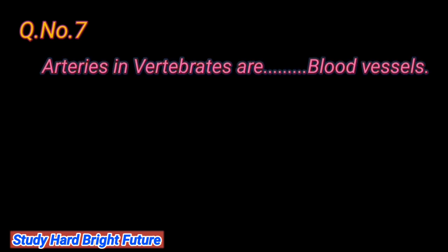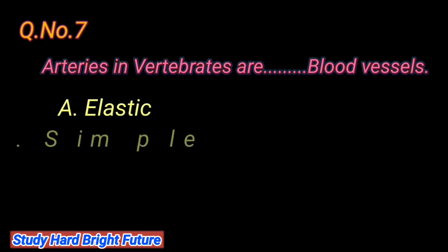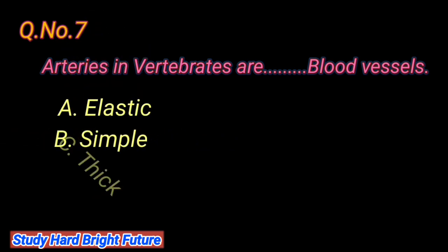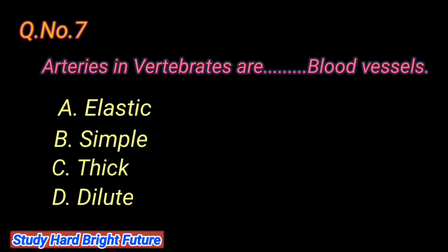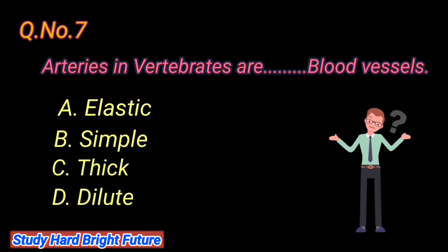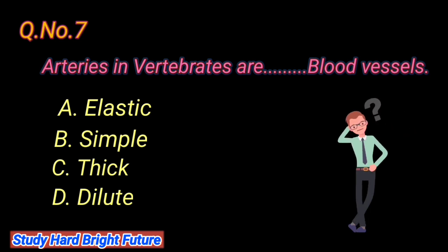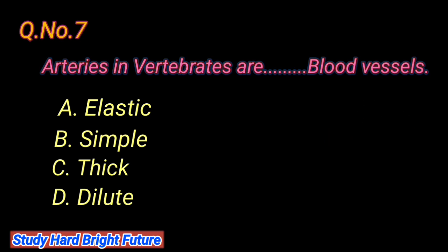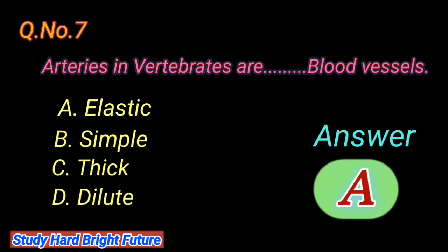Question number 7: Arteries in vertebrates are which type of blood vessels. A. Elastic, B. Simple, C. Thick, D. Dilute. The right answer is A. Elastic.